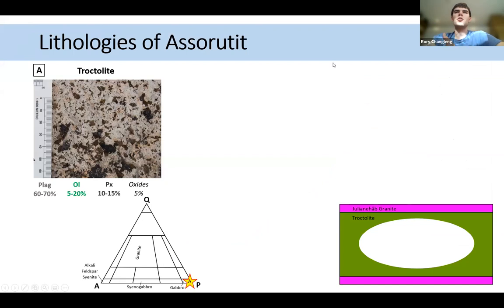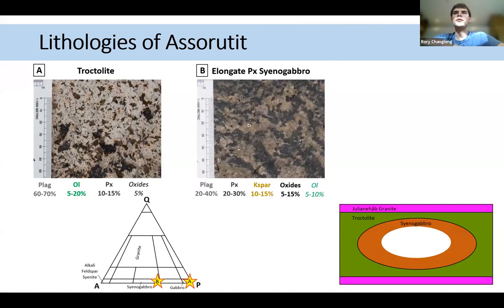And if we look at the rocks which make up this domain, we have the dike itself, which is this troctolite, which is mostly plagioclase and olivine. And then the domain as we go into it, we have syenogabbro margins, which have elongate pyroxene as being the characteristic feature of this, as well as both plagioclase and K-feldspar.